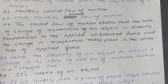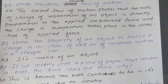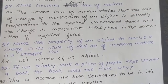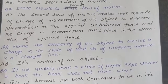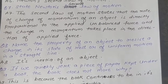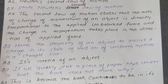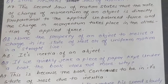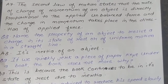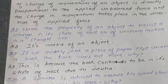The change in momentum takes place in the direction of the applied force. Question 8: Name the property of an object to resist a change in its state of rest or of uniform motion in a straight line. Answer: It is the inertia of an object.